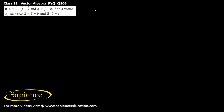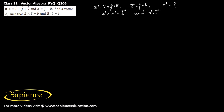We are told that vector a is î + ĵ + k̂ and vector b is ĵ - k̂. We need to find vector c such that a × c = b and a · c = 3. Let vector c equal x î + y ĵ + z k̂.